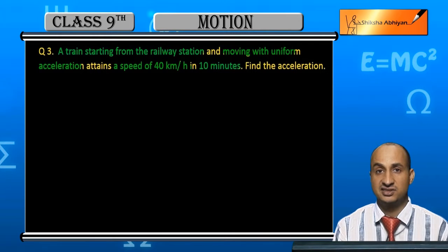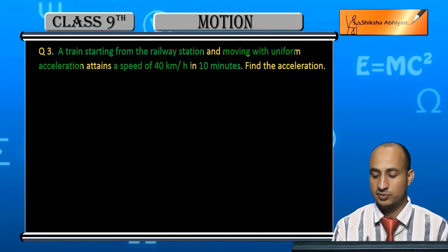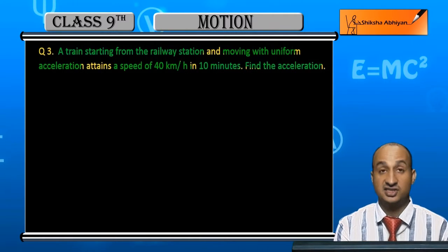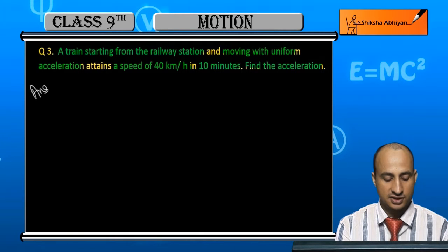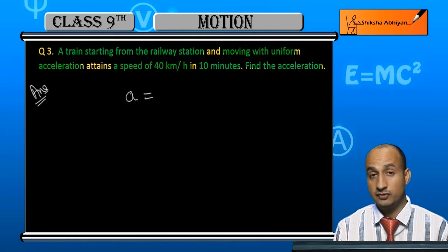It starts to count the velocity of 40 km per hour in 10 minutes. Find the acceleration. So you can tell the acceleration to see which direction. The answer is acceleration, as you know, is the rate of change of velocity.